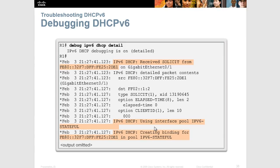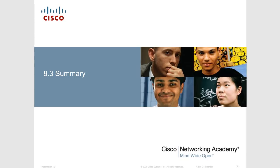That concludes Chapter 8 on DHCP. In the labs, we'll be creating DHCPv4 servers and DHCPv6 in the various states. DHCPv6 is definitely the more complicated one, but that covers the chapter. We'll be picking up Chapter 9, network address translation, and then we're almost done with just two more chapters left.